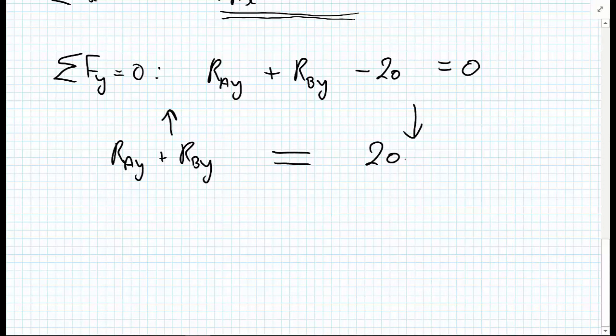Another way that people like to write this is just, first of all, write your equal sign before you get started. And on the left-hand side, put all your up forces. And on the right-hand side, put all of your down forces. So R A Y plus R B Y straight away equals 20. Whichever way you prefer, stick to it. Some other people prefer write your ups on the left-hand side of the equation, your downs on the right-hand side of the equation. Whatever floats your boat.